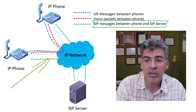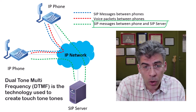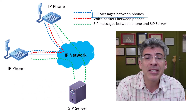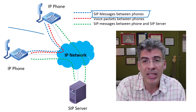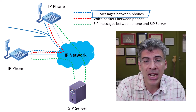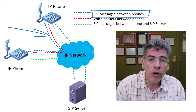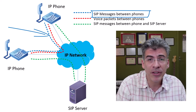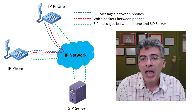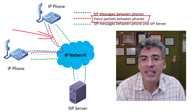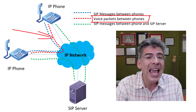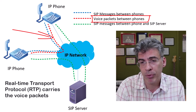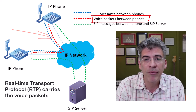During a conversation between the two IP phones, SIP messages are exchanged between the phones and the SIP server, dealing with call setup, call teardown, touch-tone tones known as DTMF, and other call control functions. SIP messages are also exchanged directly between the two phones, including codec choice and off-hook and on-hook messages — essentially sent when you lift or hang up the receiver. Finally, the actual voice packets travel directly between the two phones using a protocol called Real-time Transport Protocol, or RTP.